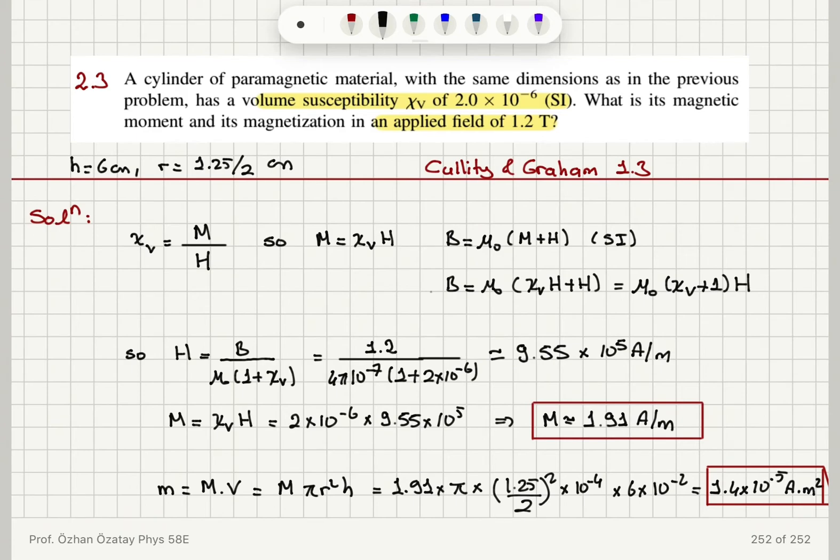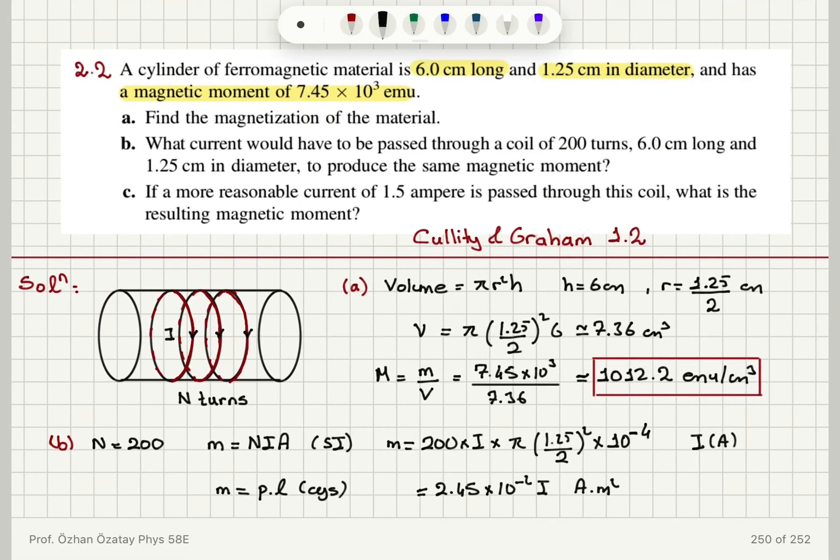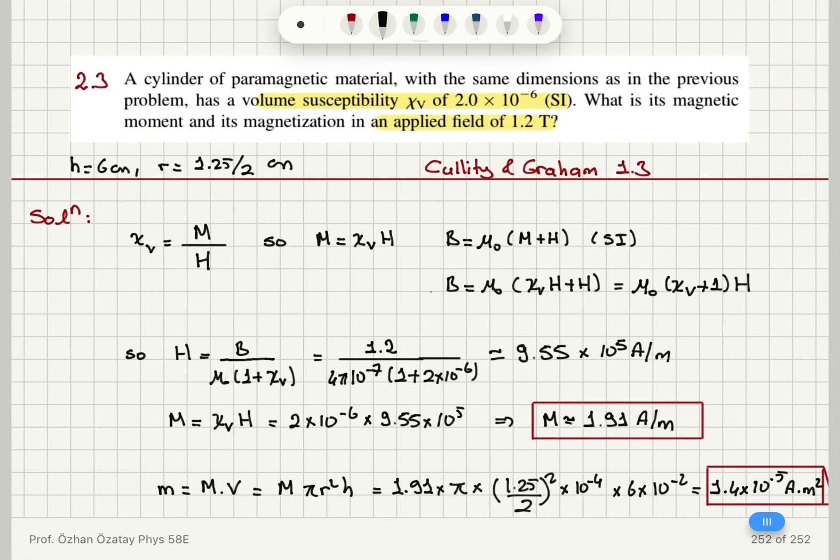So the thing to note here is that these numbers are very small compared to the previous problem where I had a ferromagnet. The magnetization was 1012.2 emu per centimeter cubed, so that is 1.012×10⁶ ampere per meter, so it's quite large. But there I solved it in CGS units. And this comes from the fact that the volume susceptibility is very small for a paramagnetic material.